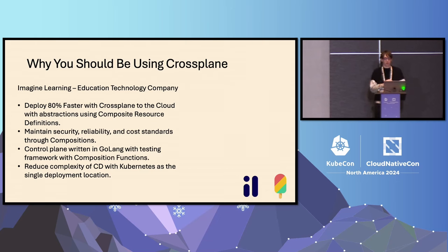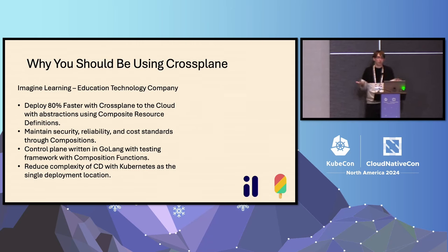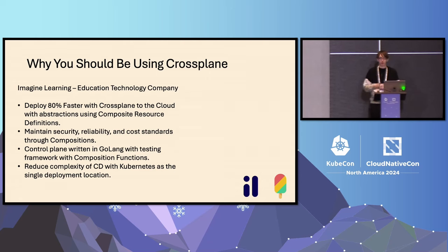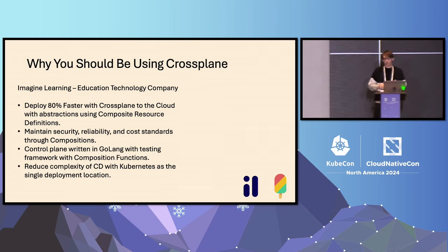One other thing we were able to do is write our control plane in a language we chose — Golang — and test with our normal coding standards using some of the utilities that Crossplane gives us by utilizing composition functions. We're also able to reduce the complexity of continuous deployment because now Kubernetes is our single deployment location, giving us only a single CD pipeline for anything we want to deploy.